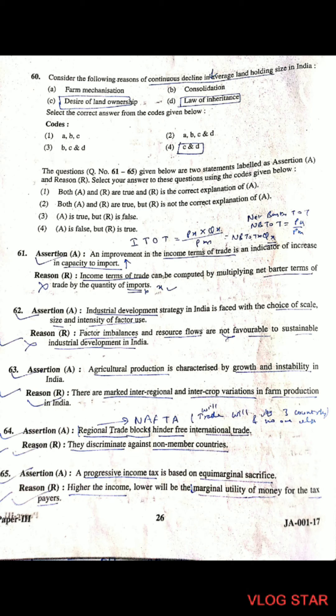Question 65: Assertion-Reason. Assertion: A progressive income tax is based on equi-marginal sacrifice. Reason: Higher the income, lower will be the marginal utility of money for taxpayers. Both assertion and reason are correct and the reason is the correct explanation of the assertion.